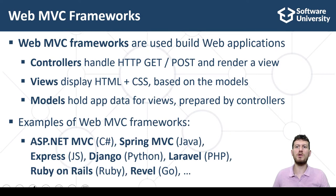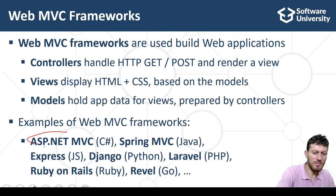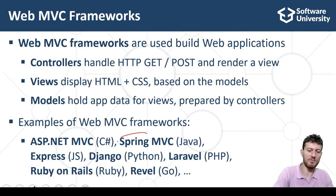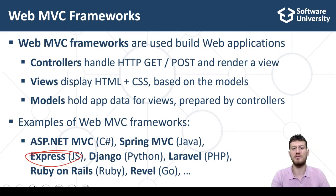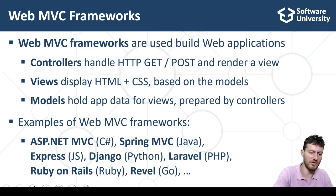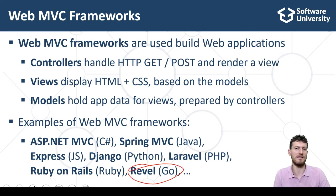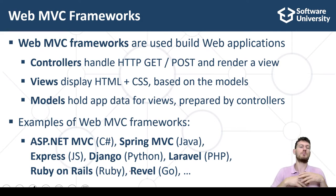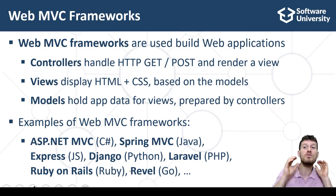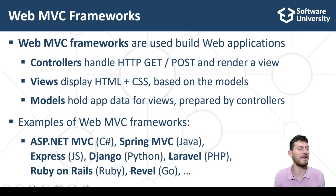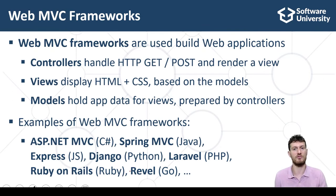Examples of popular backend Web MVC frameworks are: ASP.NET MVC for C# developers, Spring MVC for Java developers, Express.js for server-side JavaScript developers, Django for Python web developers, Laravel for PHP web developers, Ruby on Rails for Ruby developers, Revel for Go developers, and many others. Almost all server-side web development is driven by MVC frameworks, so you need to learn at least one of them if you want to be a back-end developer. We shall learn MVC frameworks at SoftUni at the end of our end-to-end training program for software engineers.